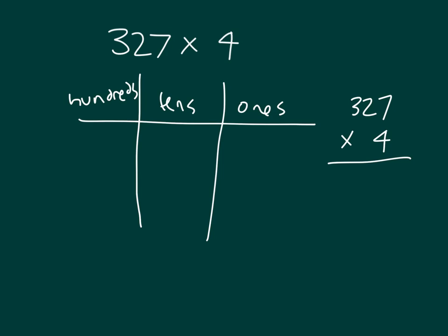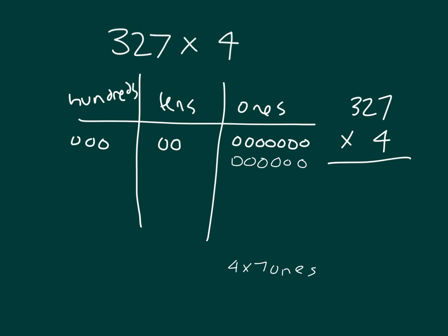Let's break apart three hundred twenty-seven — that's three hundreds, two tens, and seven ones. Next we know that we are multiplying by four. So within the ones place, if we are to multiply by four, then we're multiplying four times those seven ones. Let's write out the partial products right here: four times seven ones.